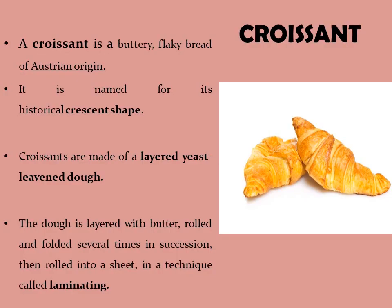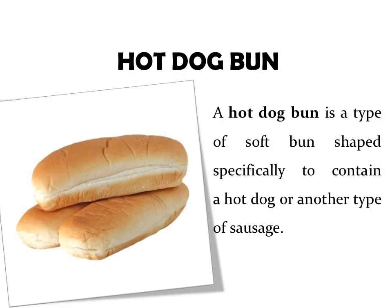The next variety of bread is croissant — many of us might misread it, but it is croissant. A croissant is a buttery, flaky bread of Austrian origin, named for its historical crescent shape. Croissants are made of a layered yeast-leavened dough. The dough is layered with butter, rolled and folded several times in succession, then rolled into a sheet in a technique called laminating.